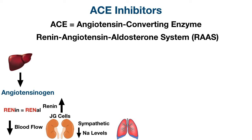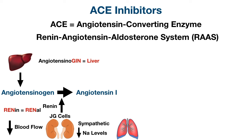Renin acts on a protein produced by the liver called angiotensinogen. You can use the 'gin' in angiotensinogen to think of alcohol, which is metabolized by the liver — this will help you remember angiotensinogen is produced by the liver. What renin does is cleave angiotensinogen to form angiotensin 1. However, it's angiotensin 2 that we need, not angiotensin 1, so we need to convert it.